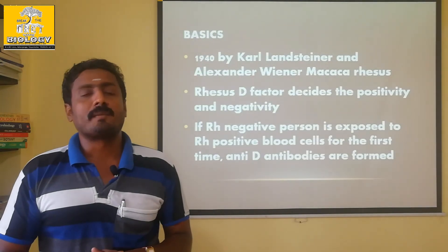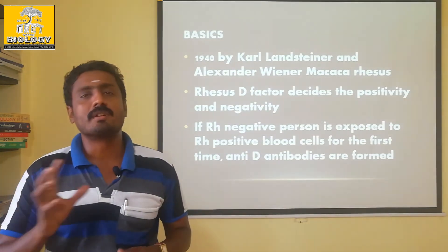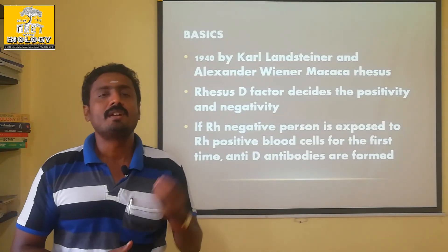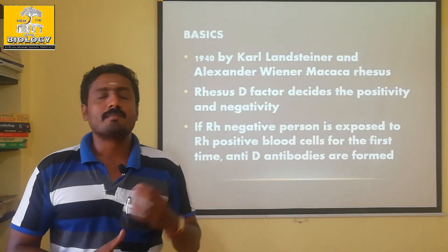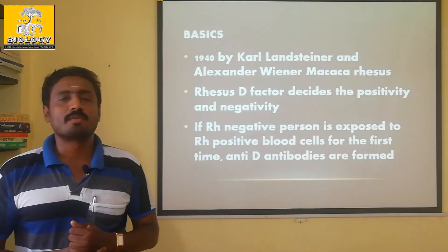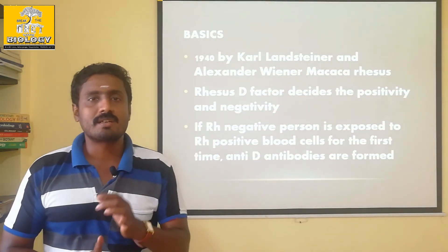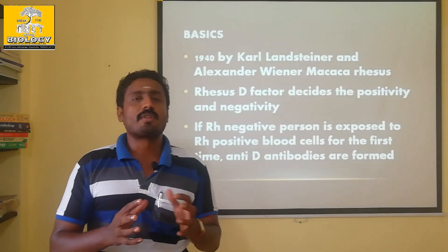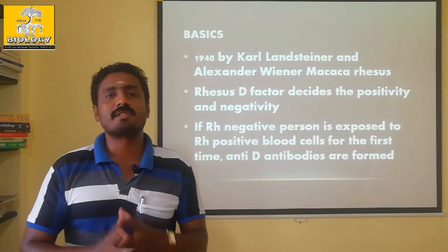The Bombay type has an H antigen. In the Bombay blood group, the H antigen is present on the RBC surface. A group has A antigen, B group has B antigen, and AB group has both A and B antigens — all derived from the H antigen. The H antigen will not allow the presence of A and B antigens in the Bombay blood group, which is the defining feature of this blood group.